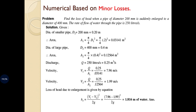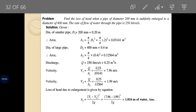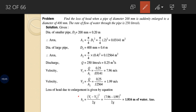Example 3 is related to minor loss. Find the loss of head when a pipe of diameter 200 mm is suddenly enlarged to a diameter of 400 mm. The rate of flow is 250 LPS. This is a case of sudden enlargement: initial diameter is 200 mm and enlarged diameter is 400 mm. The head loss equation is: HL = (V1 - V2)² / 2g.